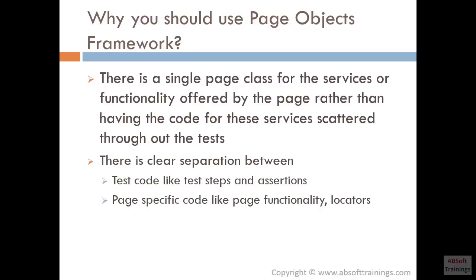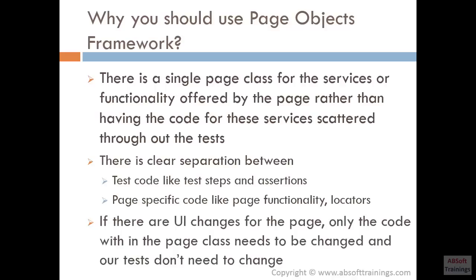With this approach, if you want to change your test you know where to go — you go to your test scripts. If you want to change your page code, you go to your page-specific class. It is a very clear separation and easy to maintain. Furthermore, if there are UI changes for the page, only the code within the page class needs to be changed and our tests don't need to change. For example, if login functionality has changed on the website, our test code will still be calling the login method with username and password — only the login method in the login page class will change. That's the power of Page Objects Framework.